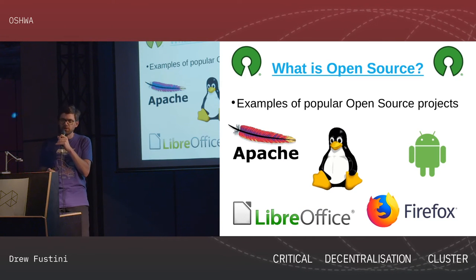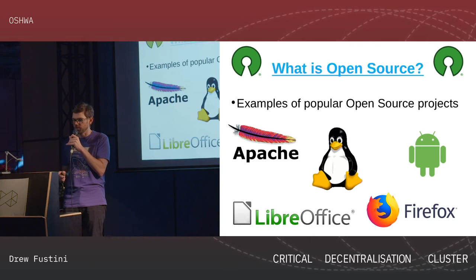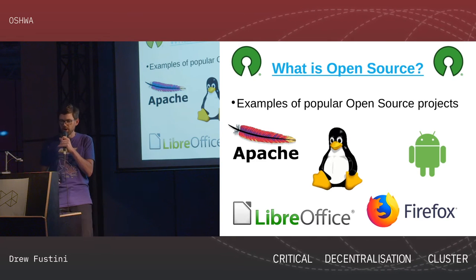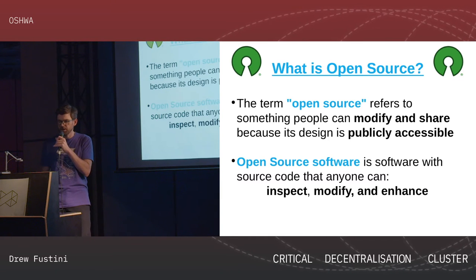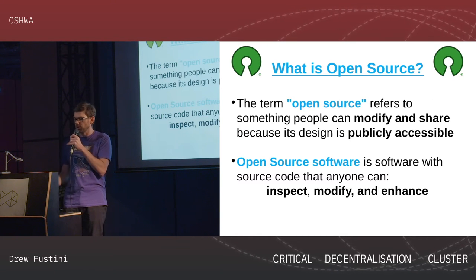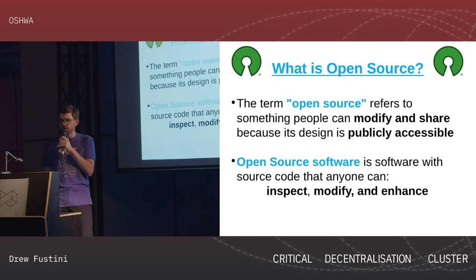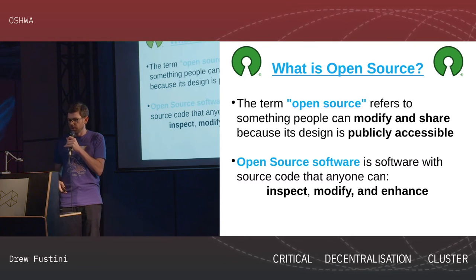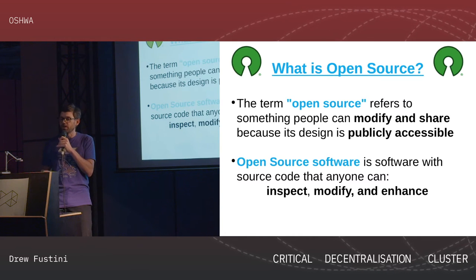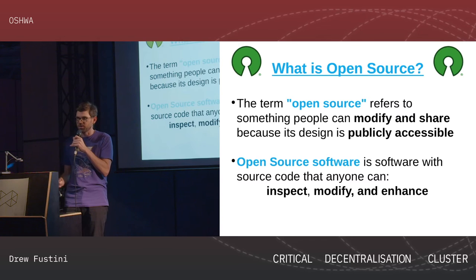Probably most people at this event have heard of open source. Examples of popular open source include Android, Linux, LibreOffice, Firefox, and Apache. The term open source refers to something that people can modify and share because its design is publicly accessible. Open source software allows you to inspect, modify, and enhance that software.